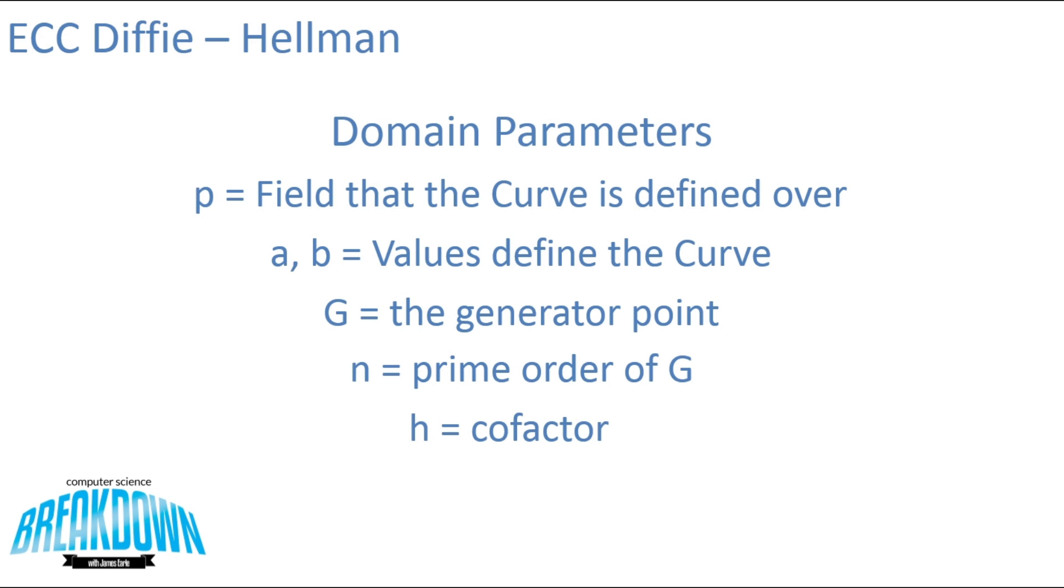The final domain parameter is H, and H is just the cofactor calculated as the number of points over the curve N. We want this to be as small as possible because the number of points divided by N, our prime order of G, if this number is as small as possible, it implies that the points are well distributed across the curve. Ideally, we actually want our cofactor to be 1.